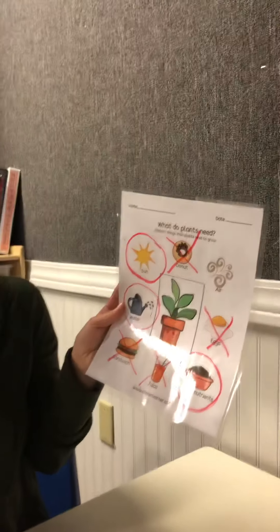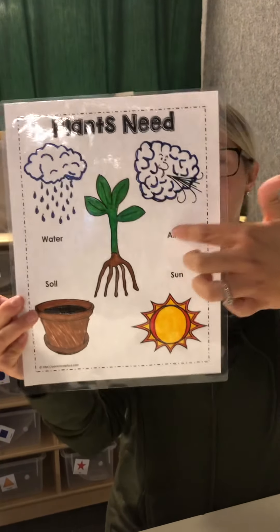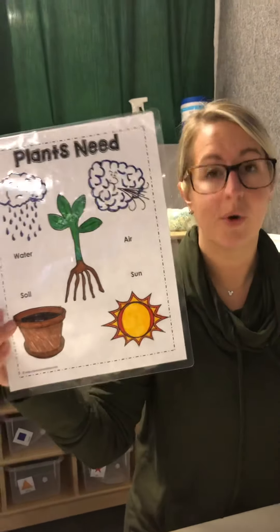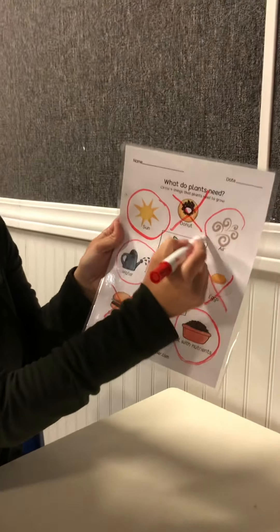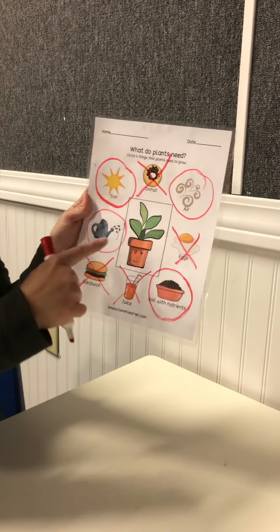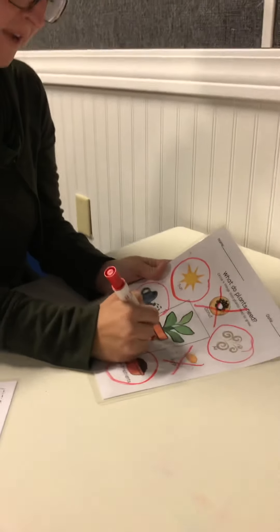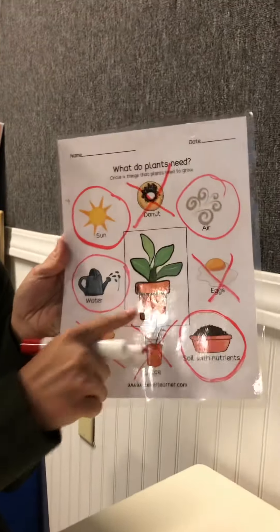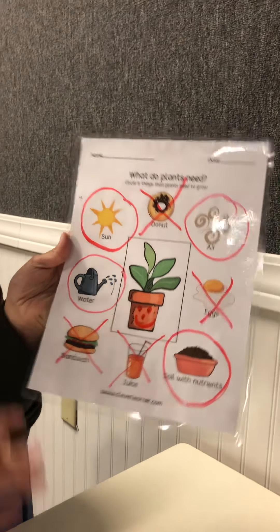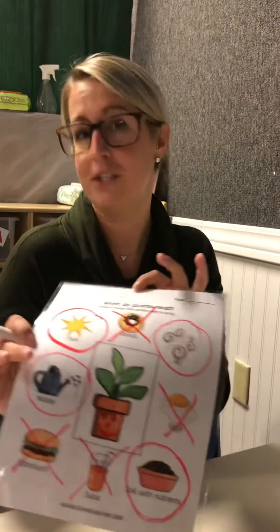And our last one is air. Does a plant need air to grow? Remember, that is air — a plant needs air to grow. So yes, let's circle our air. We found the four things that a plant needs: sun, water, dirt or soil, and air. That makes a very happy plant that's going to grow! I hope you guys enjoyed the circle activity. If you need any help or have any questions, please feel free to reach out. See you later!